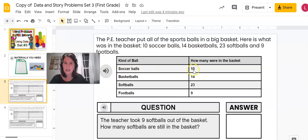Here's the chart showing us basketballs, there were 14. 23 softballs, here's softballs 23, and nine footballs. So you have to use this data to help answer the question. And do you see here, you can always click on it and it's going to read the question. The teacher took nine softballs out of the basket.